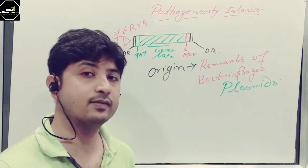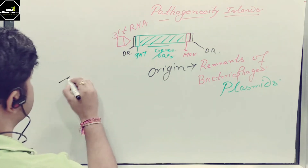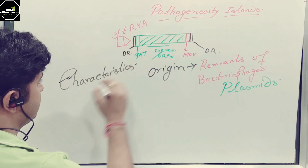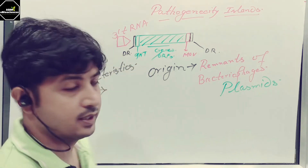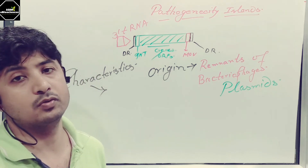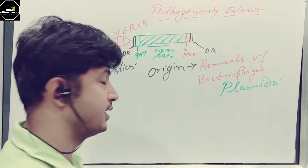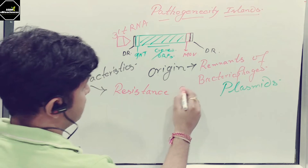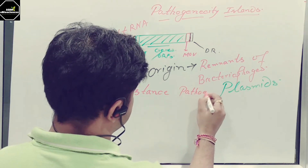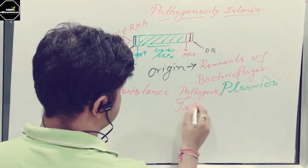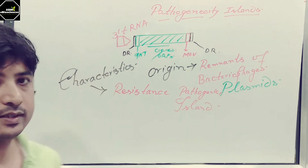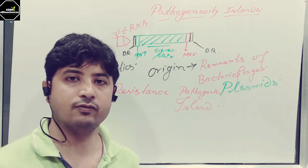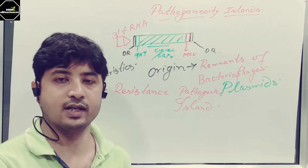Pathogenicity Islands may confer several characteristics. For example, if a pathogenicity island confers resistance to a particular antibiotic, it is called a resistance pathogenicity island. This island is giving the bacteria a particular property of defending itself against the antibiotic.